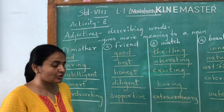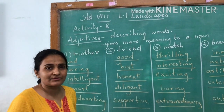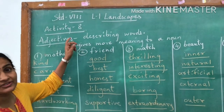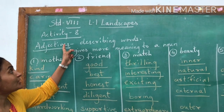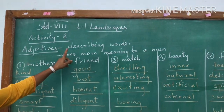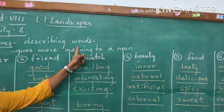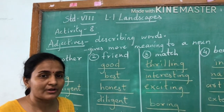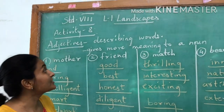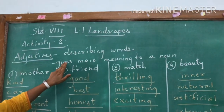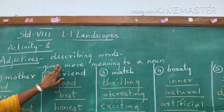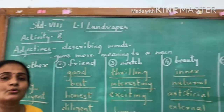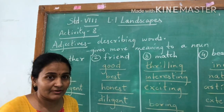Activity 8 is given on page number 7 of your textbook. Activity 8 deals with adjectives. What are adjectives? Adjectives are describing words — words that describe a noun are called adjectives. One more thing: adjectives give more meaning to a noun. They make the noun more meaningful.